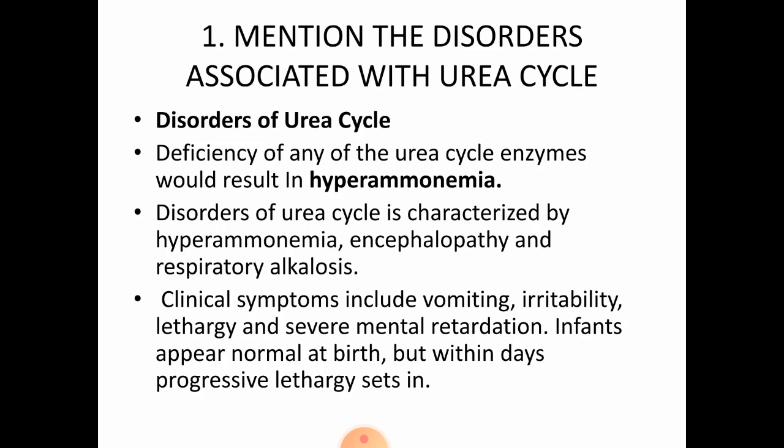First question: mention the disorders associated with the urea cycle. Disorders arise due to deficiency of urea cycle enzymes. Any defective enzyme in the urea cycle leads to defective disposal of ammonia. Since ammonia is toxic, its accumulation — called hyperammonemia — results. These disorders are characterized by hyperammonemia, encephalopathy, and respiratory alkalosis.